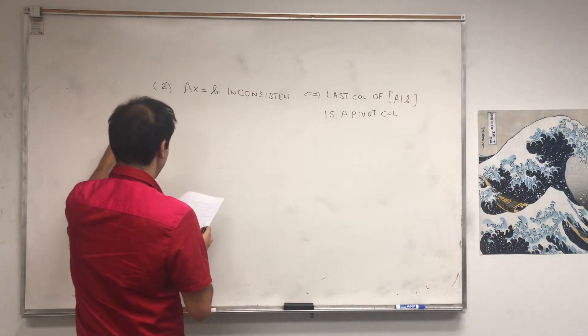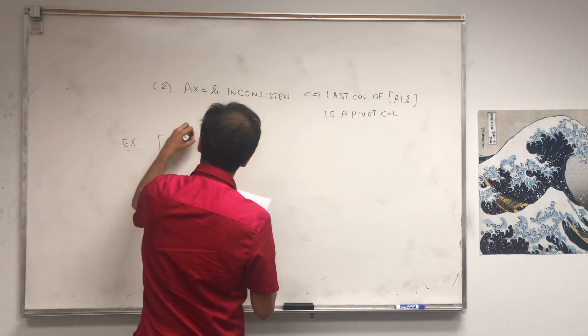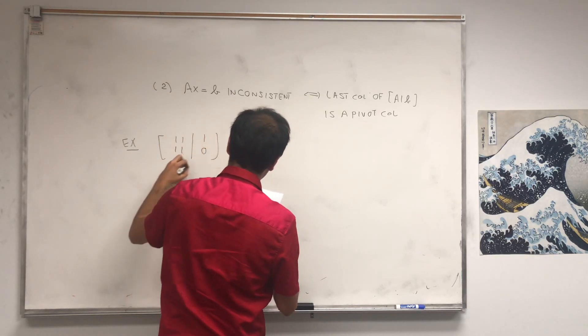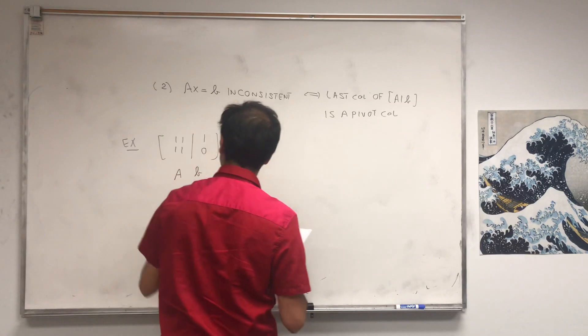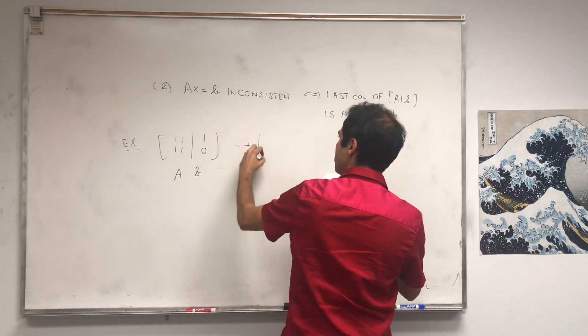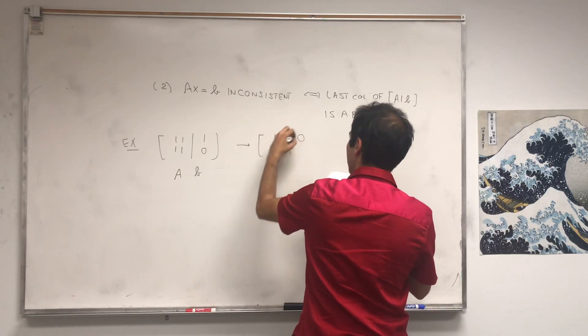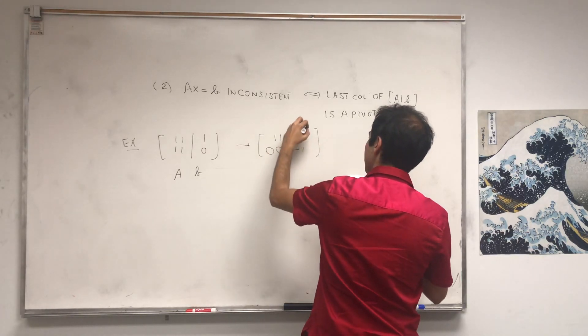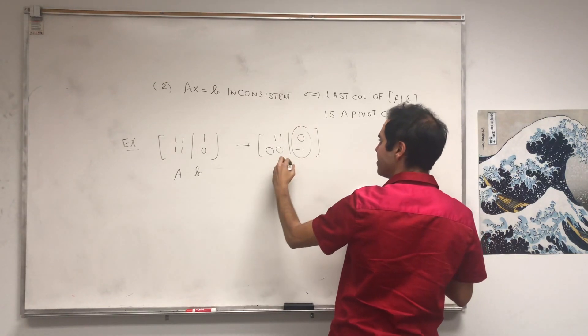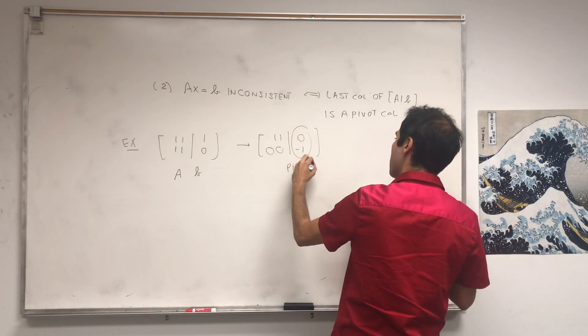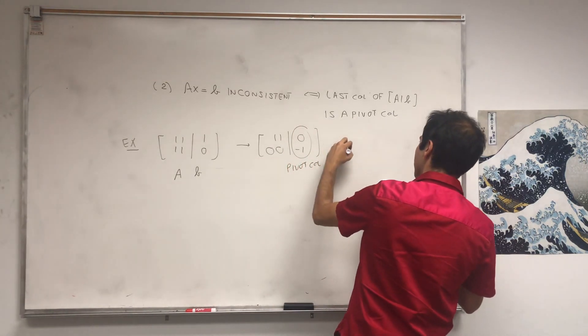So for example, suppose you have a system [1, 1; 1, 0], that is [A|B]. If you row reduce this, you get something like [1, 1; 0, 0] and then [1; -1]. Notice here, the last column is a pivot column. So, inconsistent.